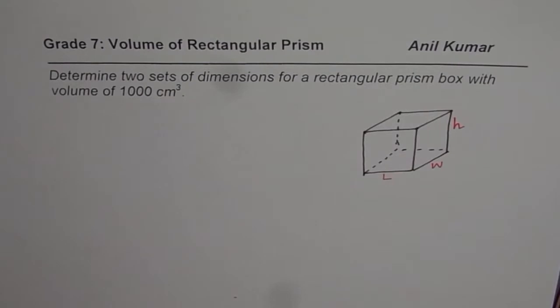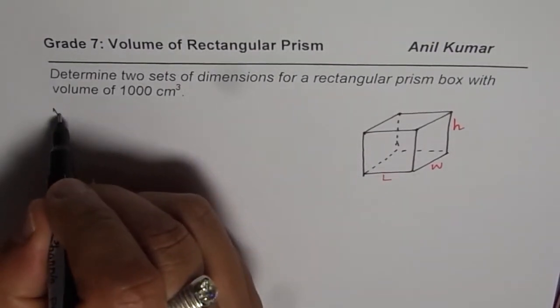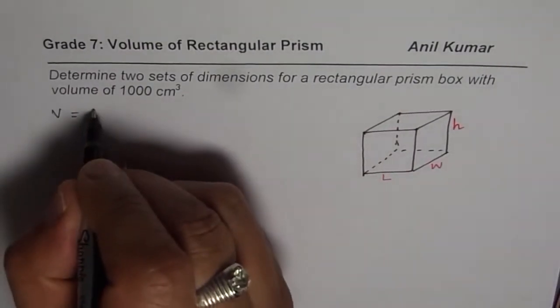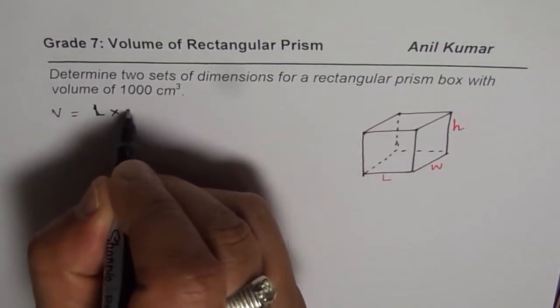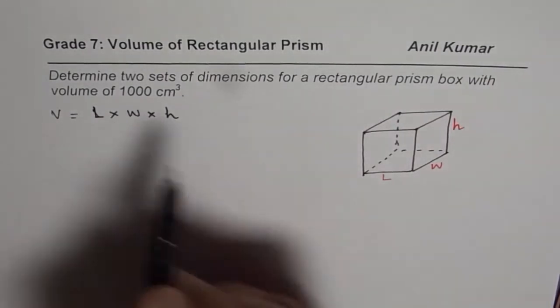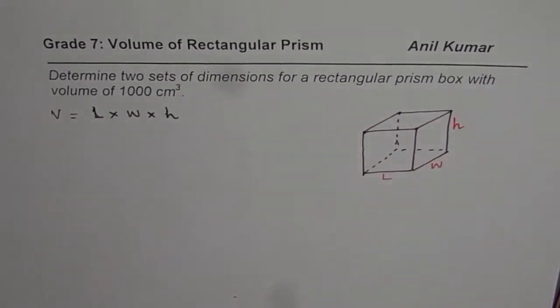So whenever we say volume of a rectangular prism, then volume for us will be equals to length into width into height. Volume will be length into width into height. And the units are unit cubed. So if length is given in centimeters, all these dimensions are in centimeters, volume will be in centimeters cube.